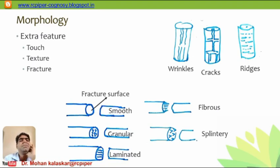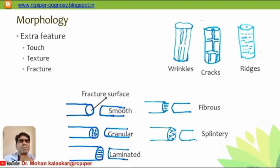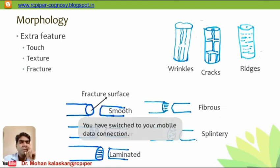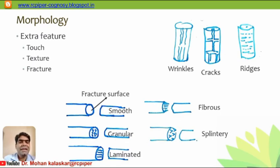Cracks are another texture feature: when the root is very large it may produce cracks over the bark surface — both longitudinal and transverse — which are characteristic of a particular plant. Ridges are small dots running horizontally that produce ridges over the root surface. These are the three main textures to observe, though others may be encountered. Fracture refers to the surface revealed when we break the root in half — this is the fractured surface.